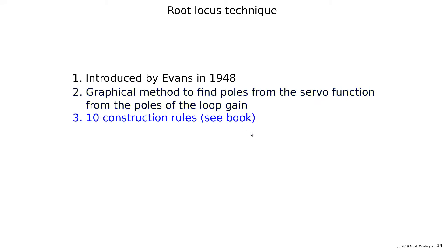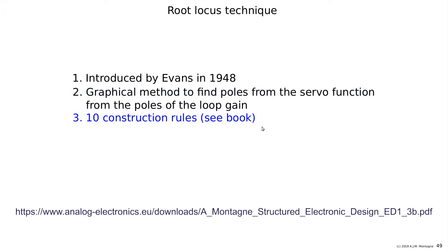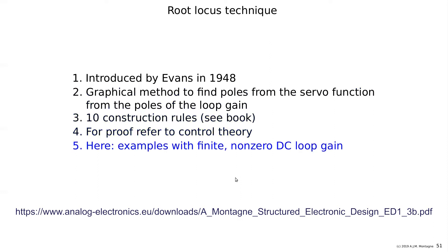There are 10 construction rules, all given in the book, though not all proofs are provided — for those you need control theory. We will go through all the rules today. We will do examples for systems with a finite non-zero DC loop gain. This is also implemented in Slicab because it is a very important tool for frequency compensation of amplifiers.